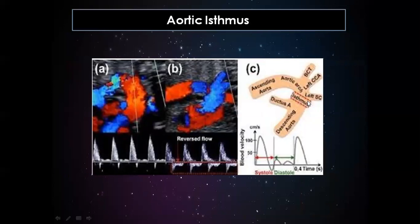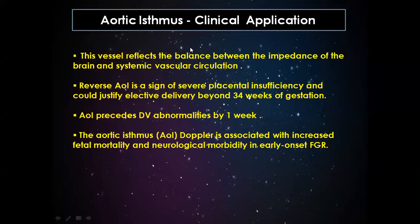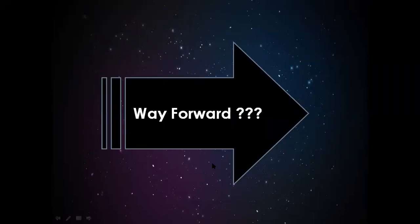The aortic isthmus is a small portion of the aorta lying between the left subclavian artery and the ductus arteriosus. Normally it has a triphasic flow pattern with a small dip in early diastole. With hypoxia there is reversed diastolic flow. This vessel reflects the balance between cerebral and systemic circulation impedance. Reversed aortic isthmus flow signifies severe placental insufficiency and can justify elective delivery beyond 34 weeks. It precedes ductus venosus abnormality by one week and is associated with increased fetal mortality and neurological consequences in early childhood.